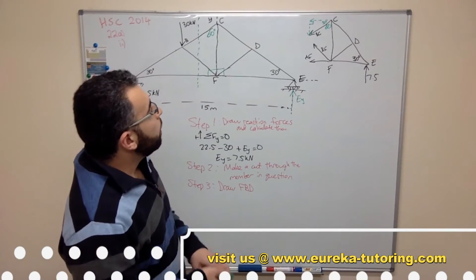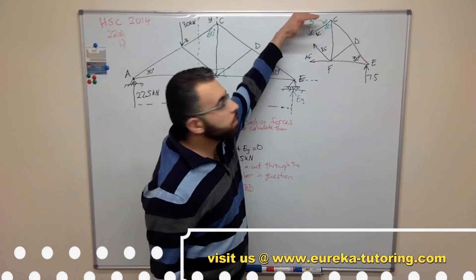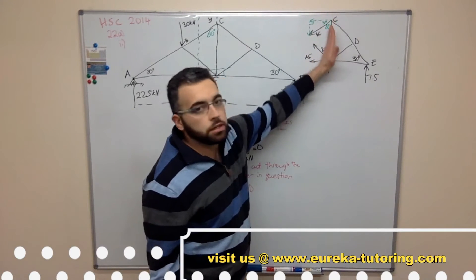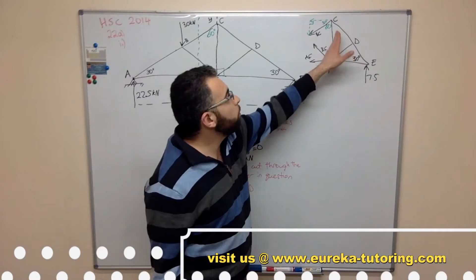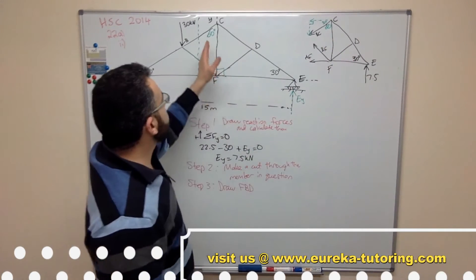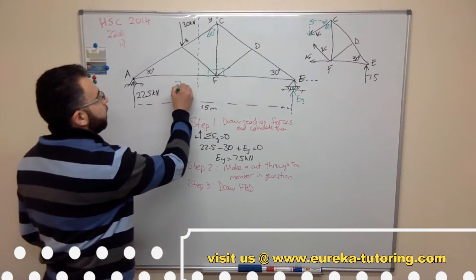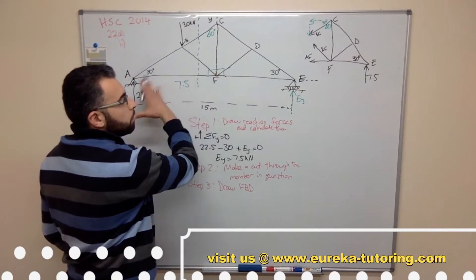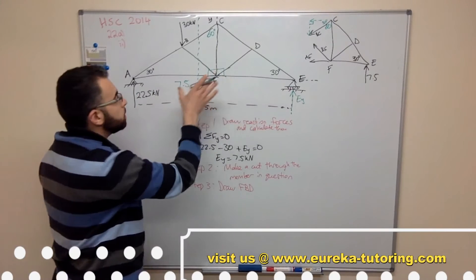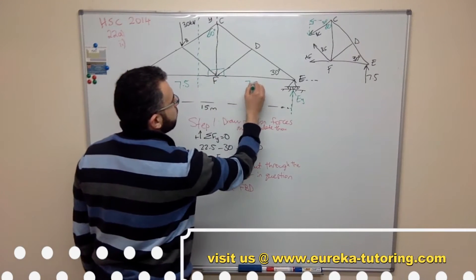Now like I said, this horizontal component will create a moment, which means this force times this perpendicular distance. But we need to first find out what CF is. So go back to the bigger diagram. We know that this is 7.5 because this member bisects this horizontal member. So this is 7.5, this is 7.5.